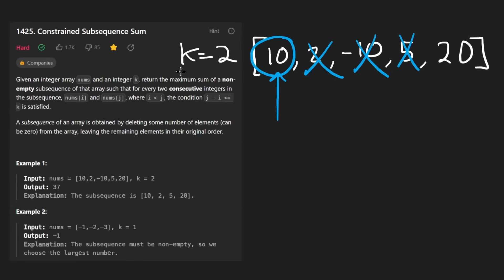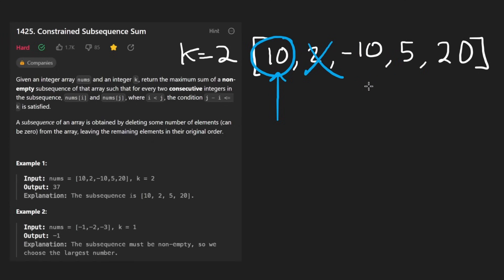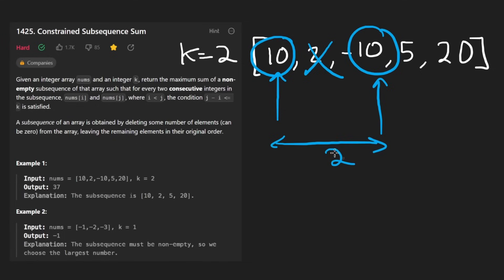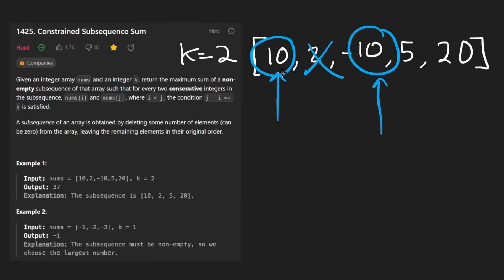It's a little bit unintuitive. If k is 2, that doesn't mean the max gap can be equal to 2. It means that the maximum distance between elements that we include can be 2. So if k is equal to 2, we can skip at most one consecutive element.